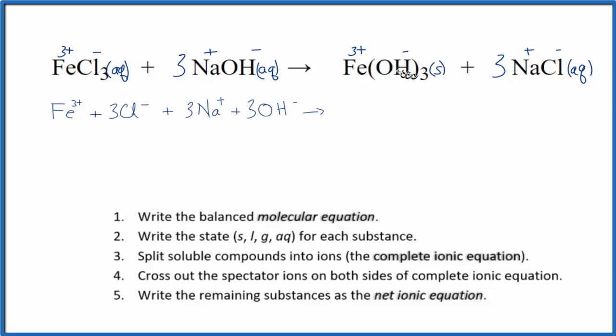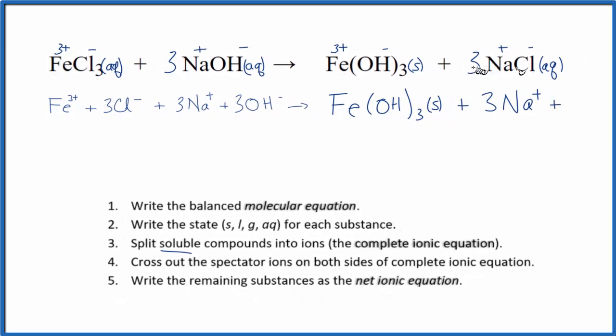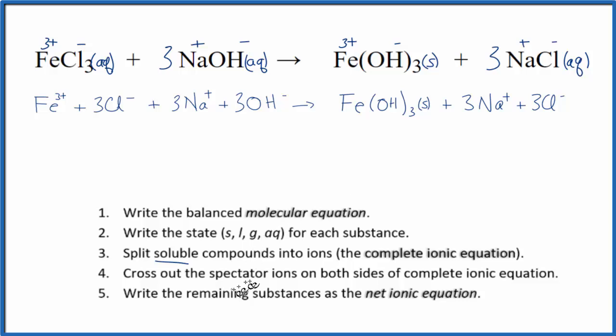On the product side, this is a solid here. We said we're going to split the soluble compounds. Since it's a solid, it's not soluble. So we just write Fe(OH)3. We leave this as a solid, put an S there. Then we have the three sodium ions plus three of the chloride ions. So now we've split everything apart into the ions.